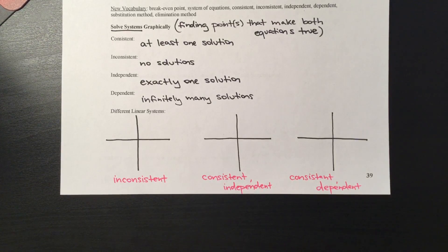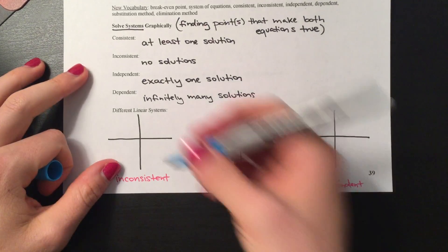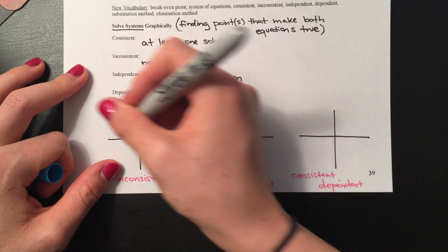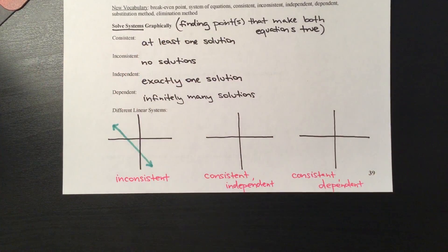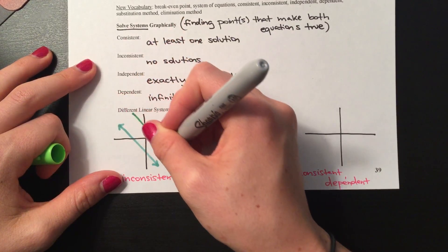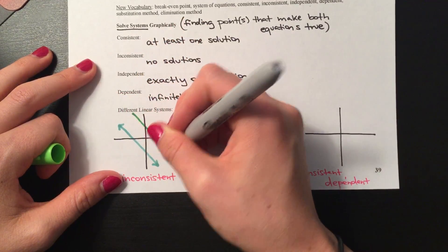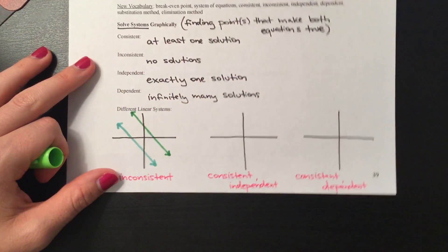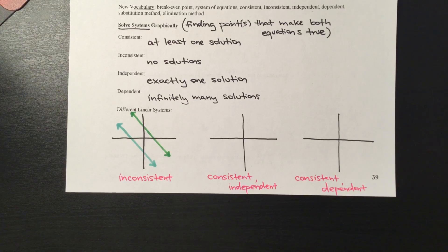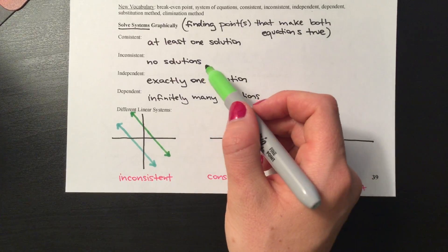An inconsistent system means we're dealing with two parallel lines. You might have a line like that, and then another line that runs perfectly parallel to it. Since those lines will never intersect each other, they're never going to have any overlapping point — so they have no solution. That's what makes it inconsistent.